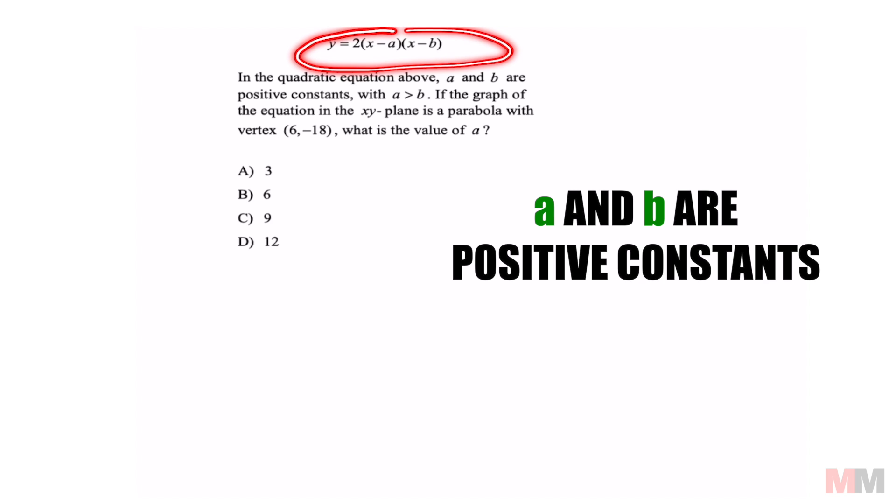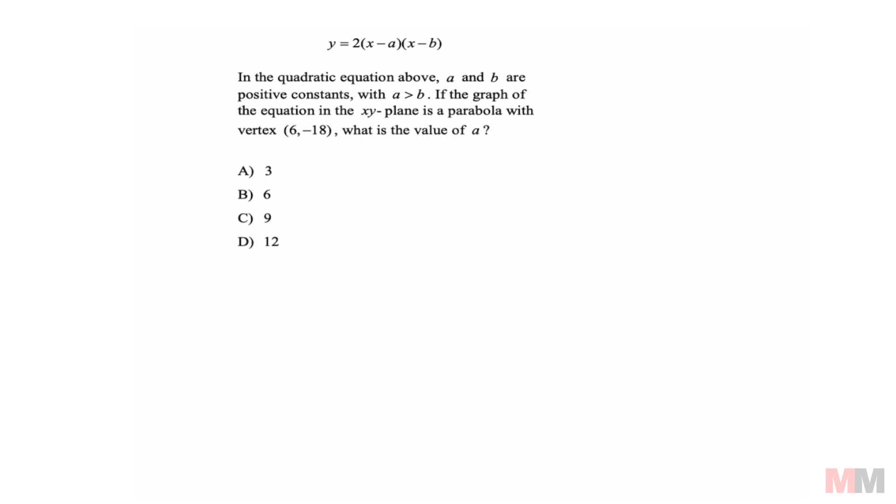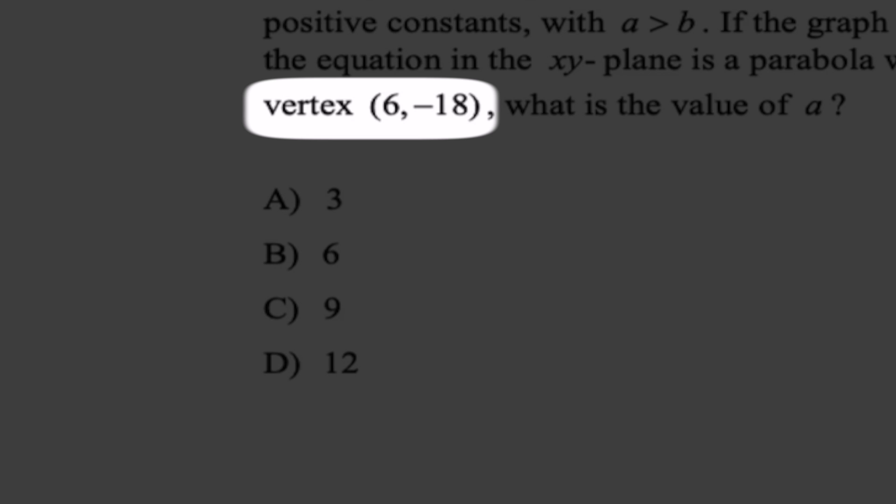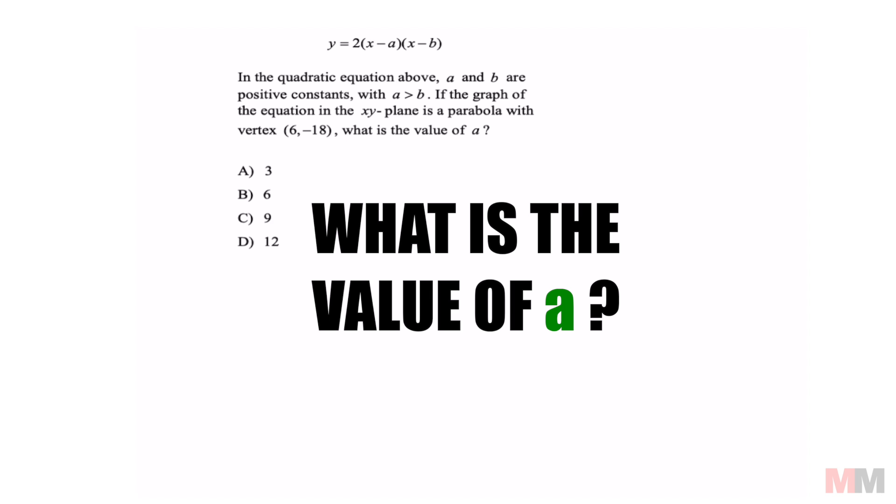In the quadratic equation above, a and b are positive constants where a is more than b. If the graph of the equation in the xy plane is a parabola with vertex 6 and negative 18, what is the value of a?